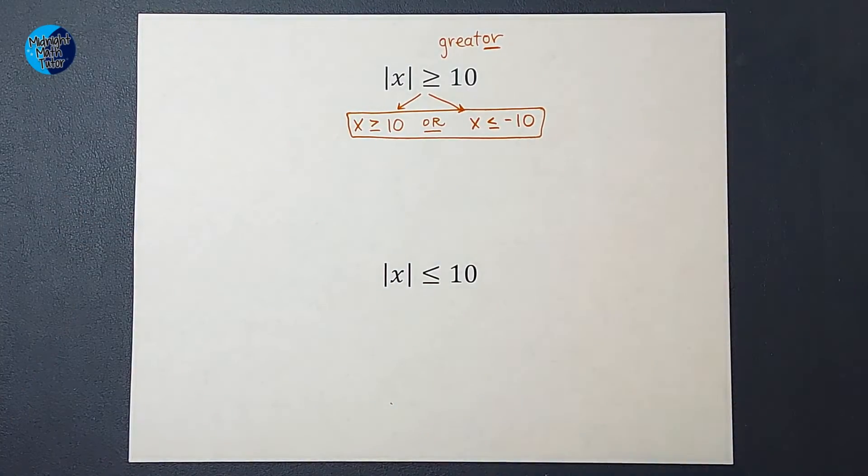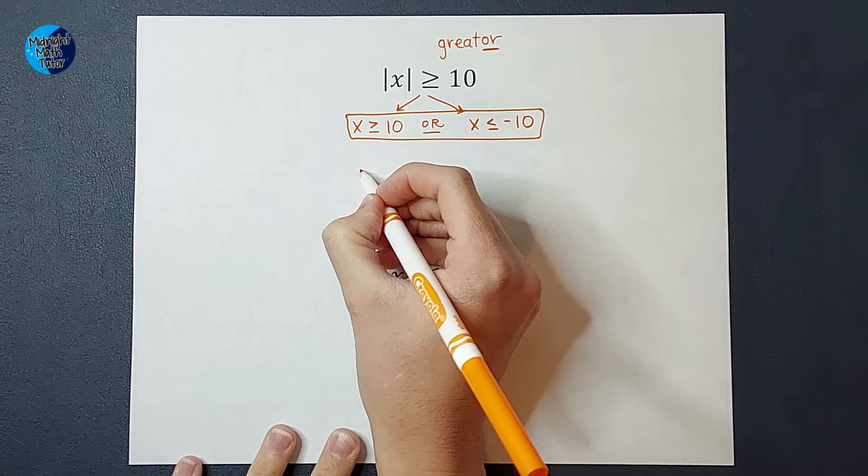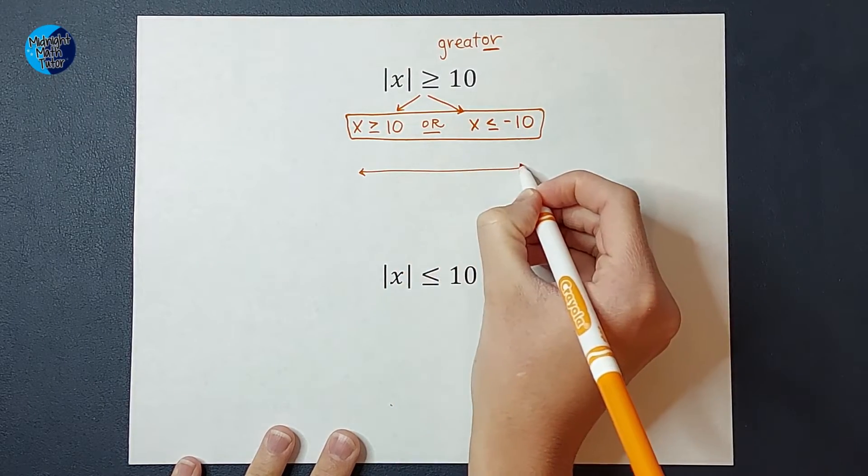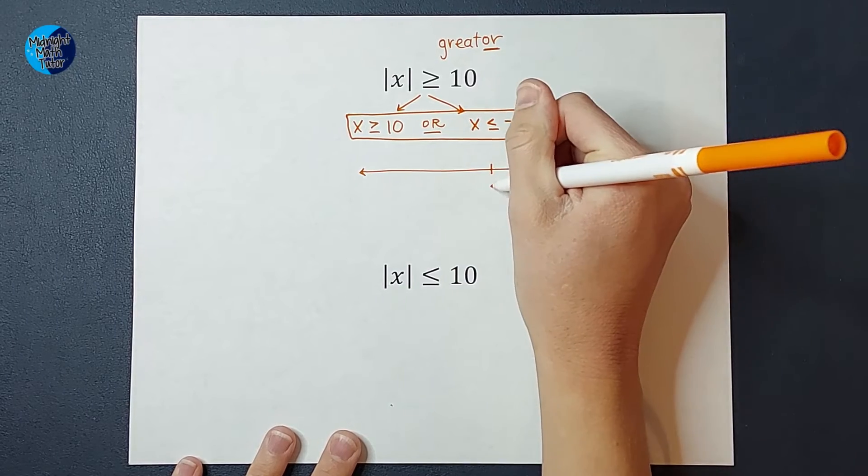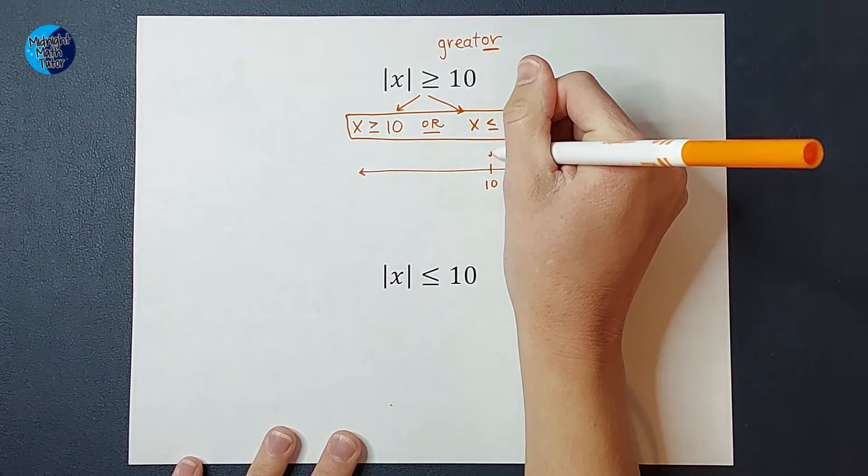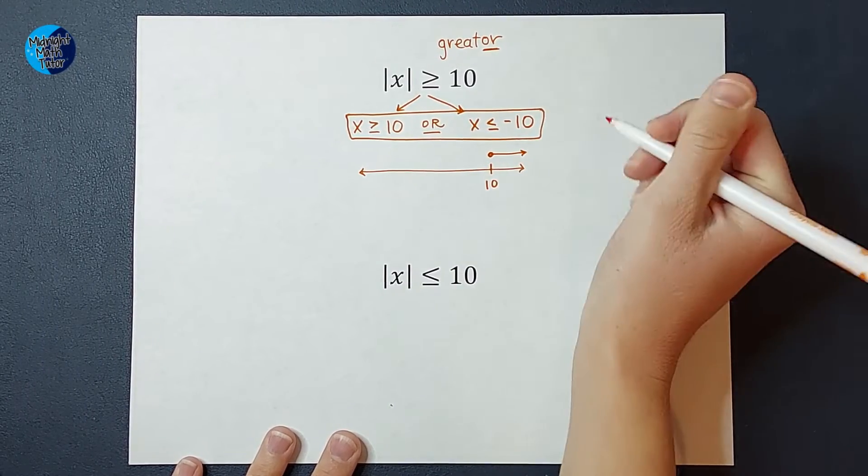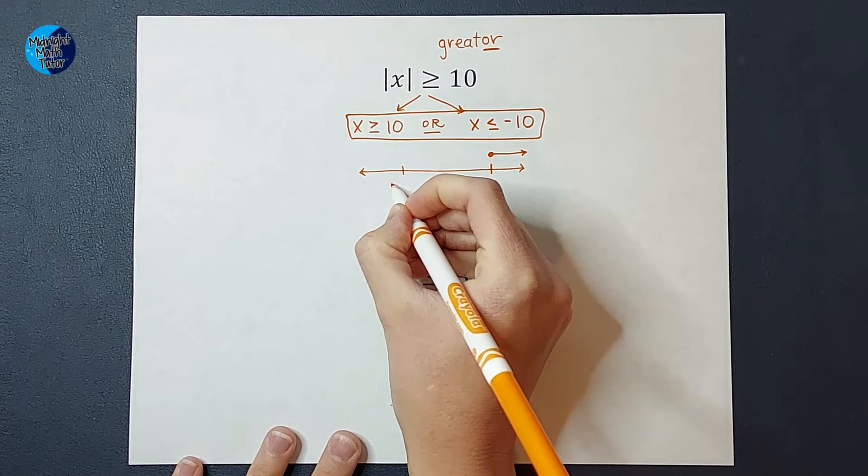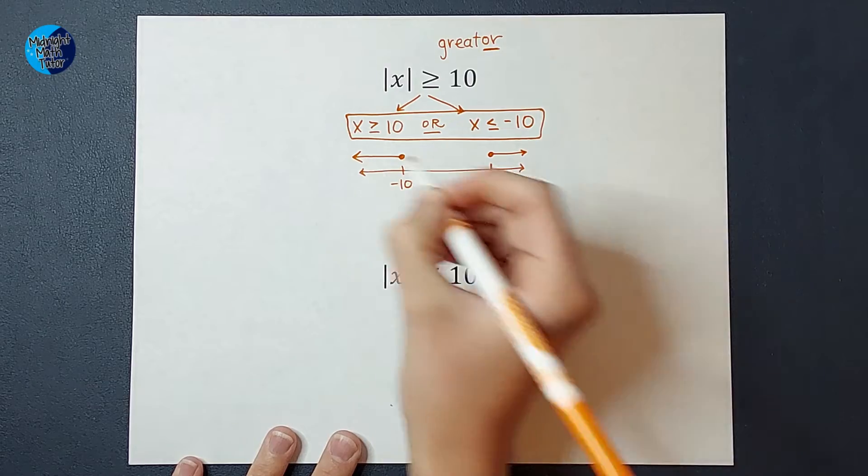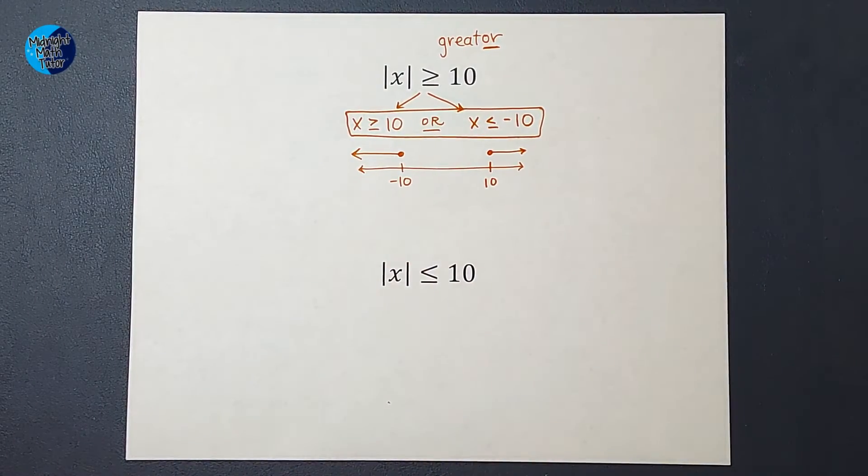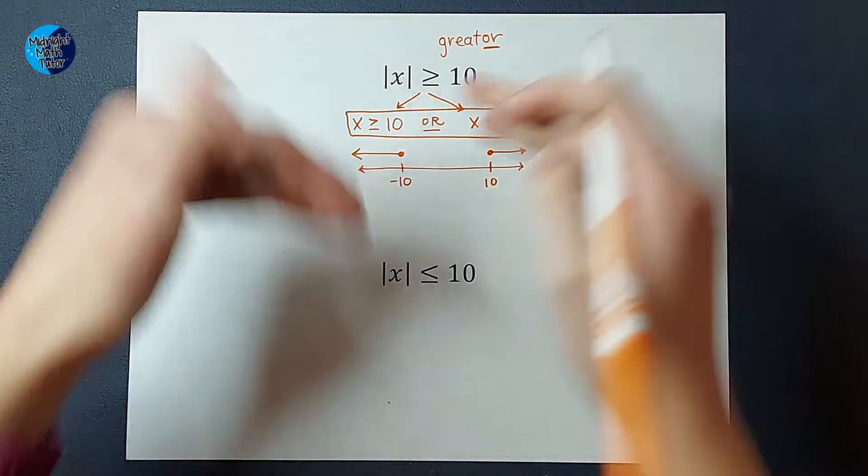Well, let's go ahead and graph this on a number line. I know you love number lines, don't leave, it's going to be good. So if I were to graph these, I would have the X can be greater than or equal to 10, or X can be less than or equal to negative 10. So let's just think of that in the context of our original problem.